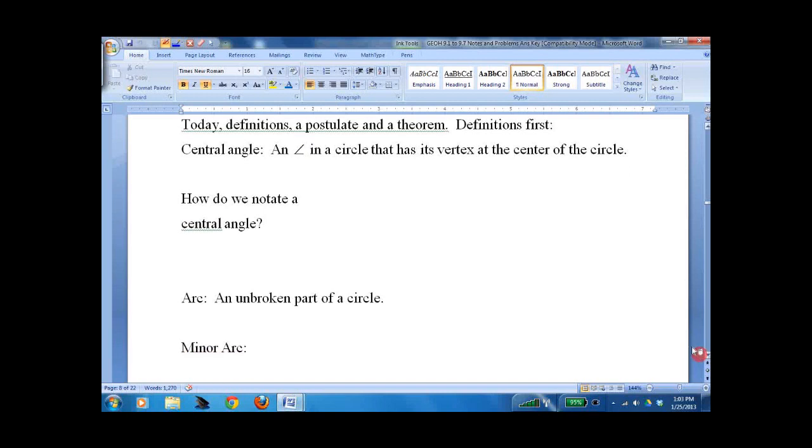What's a central angle? It's an angle in a circle with the vertex at the center of the circle. So, call it Circle O, and it hits here. And here, that's a central angle right there.